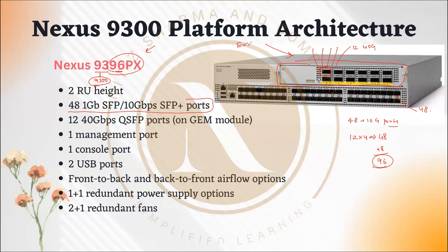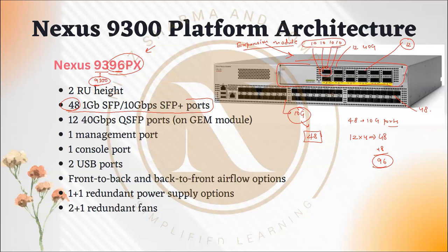The 9396 also has an expansion module — this is called an expansion module. Total SFP 10 Gig ports: 48. Quad SFP ports: 12. If you distribute using a breakout cable, each port splits into four 10 Gig ports, so 12 into 4 equals 48. Then 48 plus 48 equals 96 ports total — that's how it becomes the 96PX.